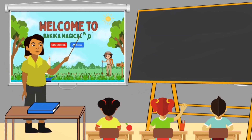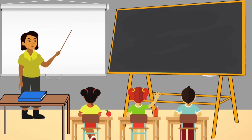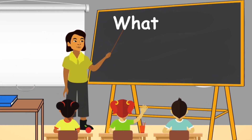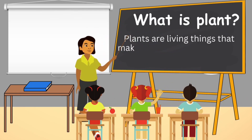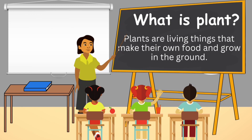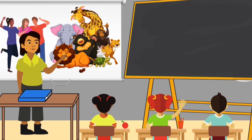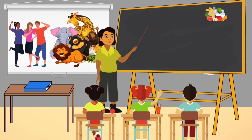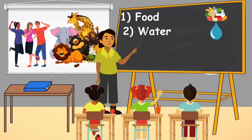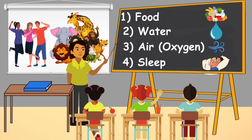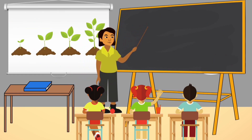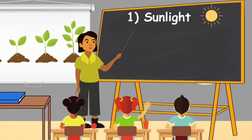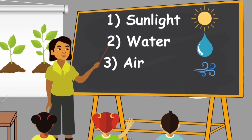Welcome to the Kika Magical Kids! Today we'll explore what plants are and learn about their different types. Plants are living things that make their own food and grow in the ground. Humans and animals are also living things. For healthy growth, humans and animals need food, water, air, oxygen, and sleep. Similarly, all plants need sunlight, water, and air.